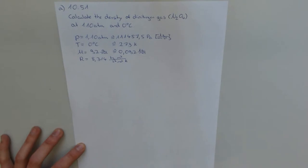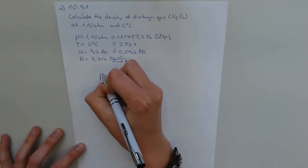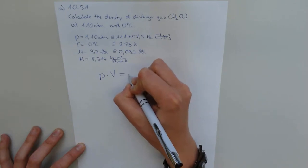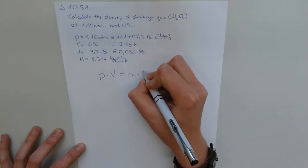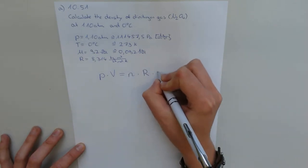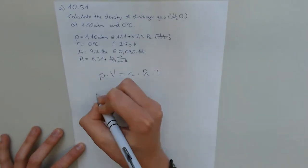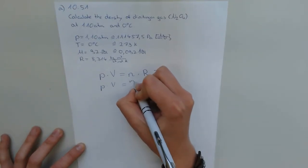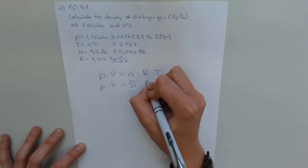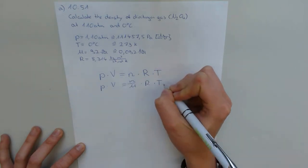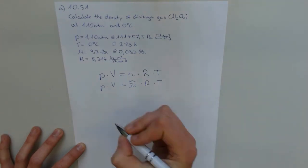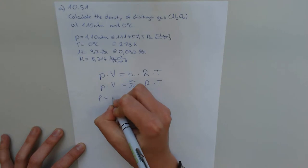We need the ideal gas equation which is pressure multiplied by volume equals the amount of substance multiplied by the gas constant times temperature. And we want to have the density, and the density is defined by mass per volume.